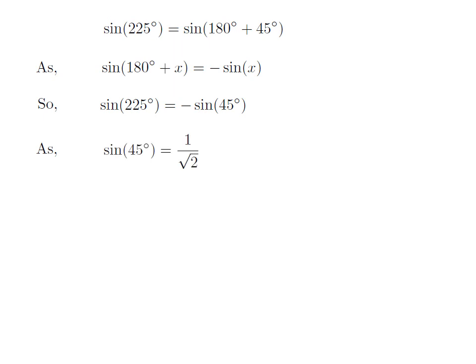We know the value of sine of 45 degree is equal to 1 upon square root of 2. So, the value of sine of 225 degree is equal to minus 1 upon square root of 2.